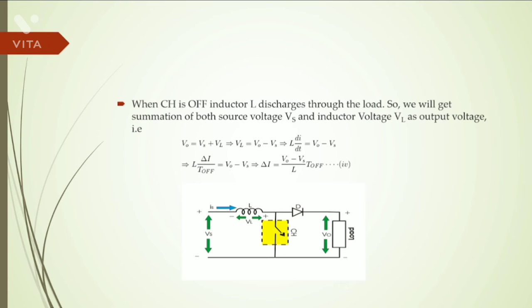And when chopper is off, inductor L discharges through the load. So we will get summation of both source voltage Vs and inductor voltage VL at the output. That is, Vout equals Vs plus VL. It means at the output, we will get the increased voltage level. Output voltage is greater than input voltage.